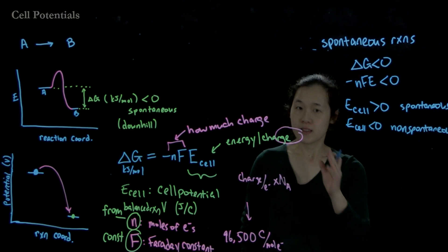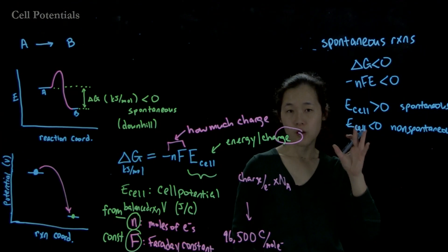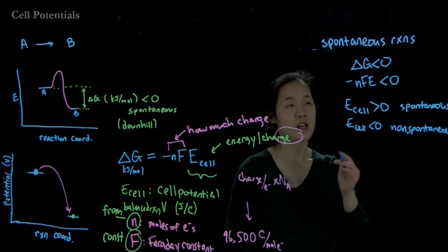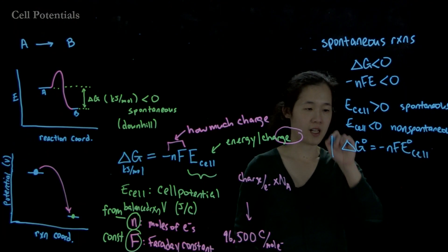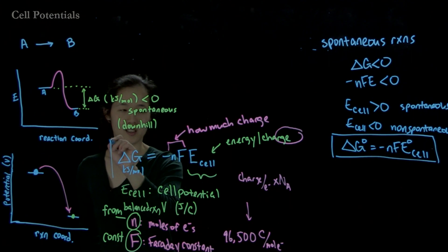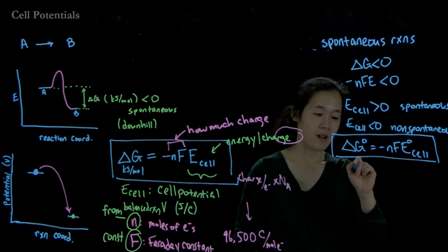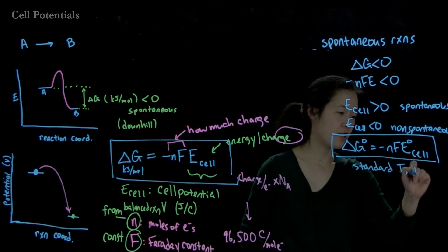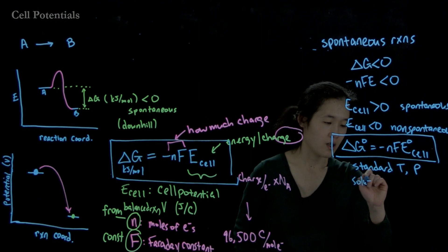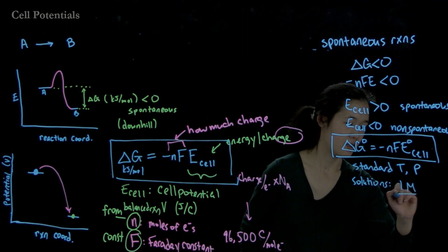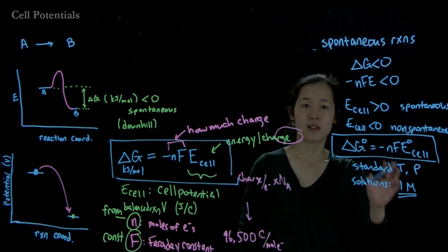Delta G and E cell will change for every different reaction and under different conditions. What you want to know — and what you can read off a table — is the standard cell potential and the standard free energy. So: delta G naught equals negative nFE naught cell. This is the key takeaway of this entire lecture — you must know this equation. The standard conditions mean standard temperature, pressure of one bar, and for solutions, 1 molar concentration. If you have a concentration different from 1 molar, your cell potential will change and you won't be under standard conditions — we'll talk about those effects in the following lecture.